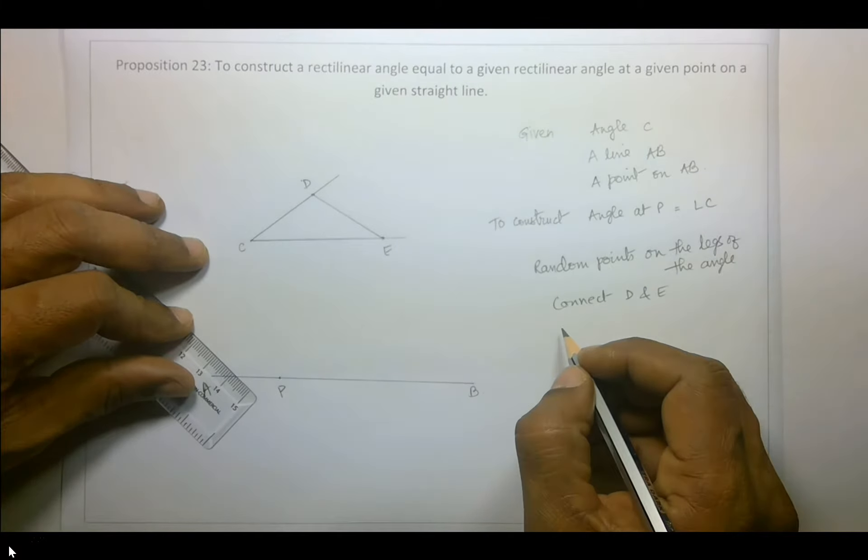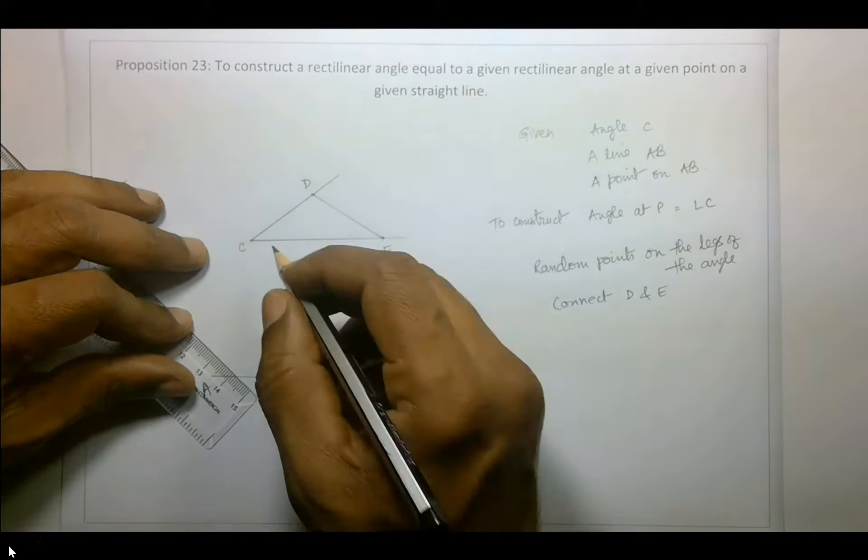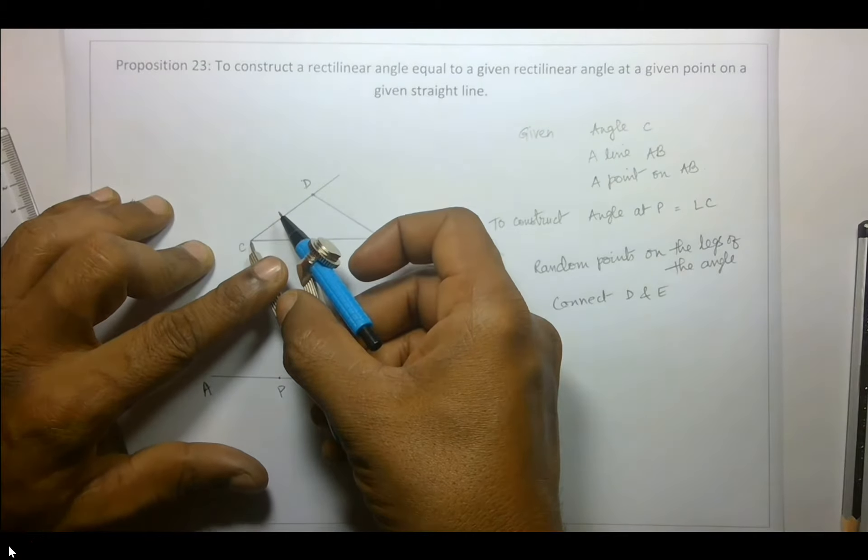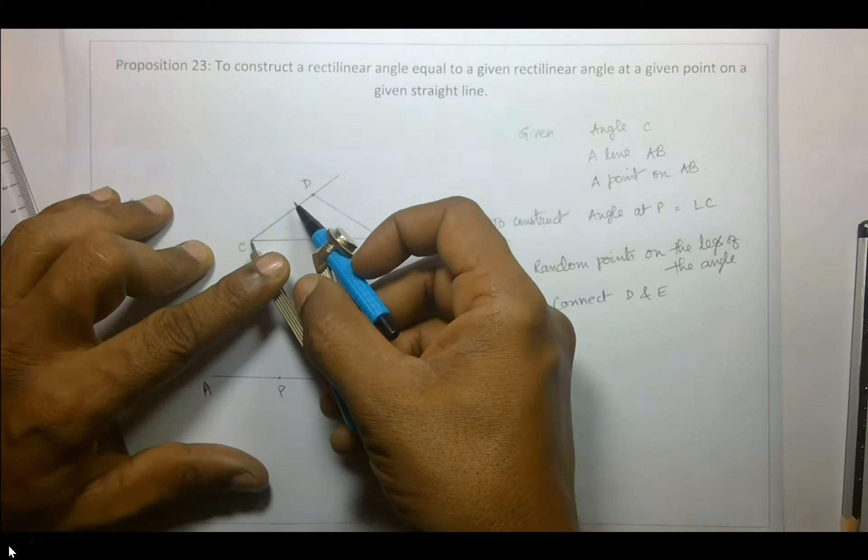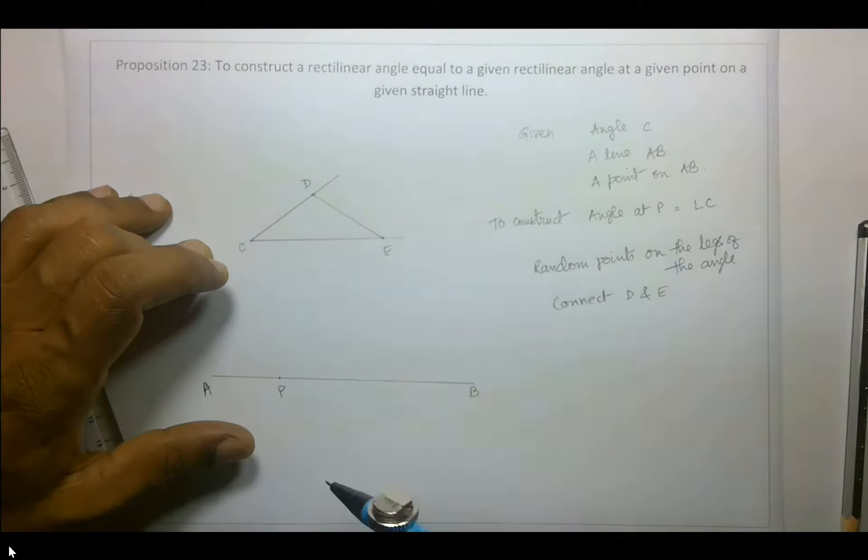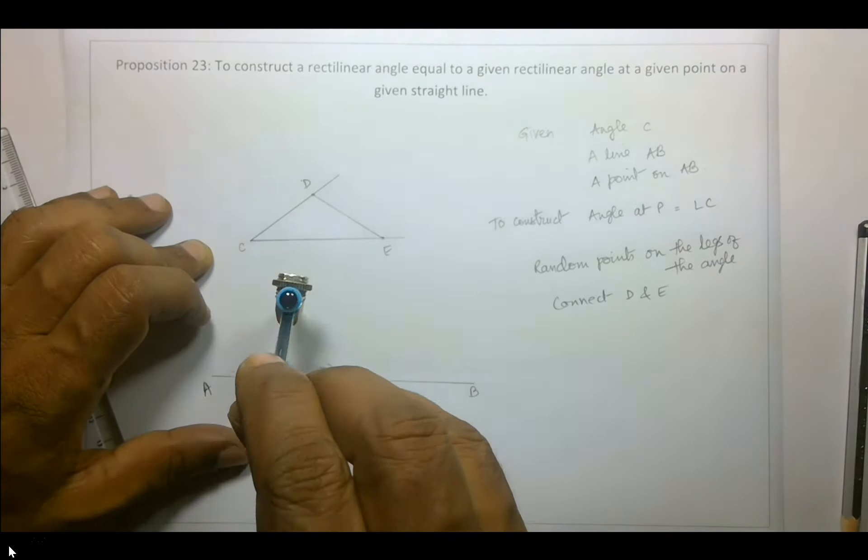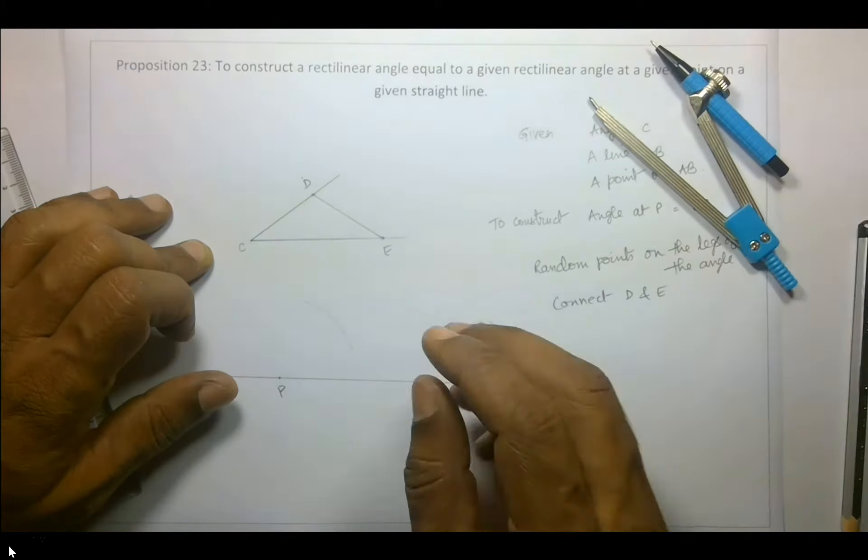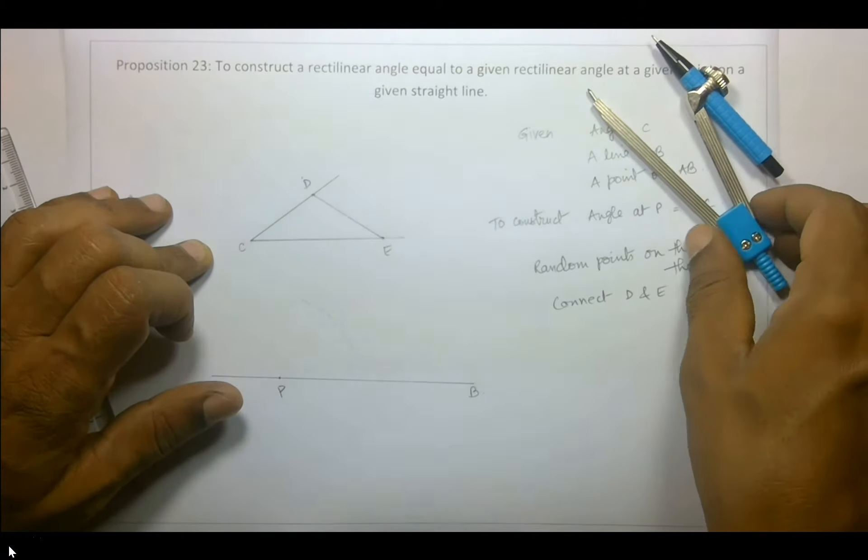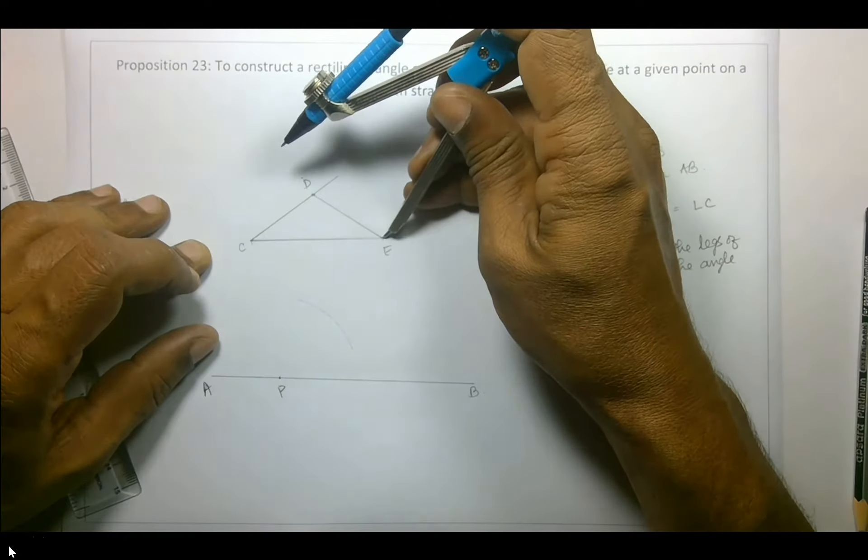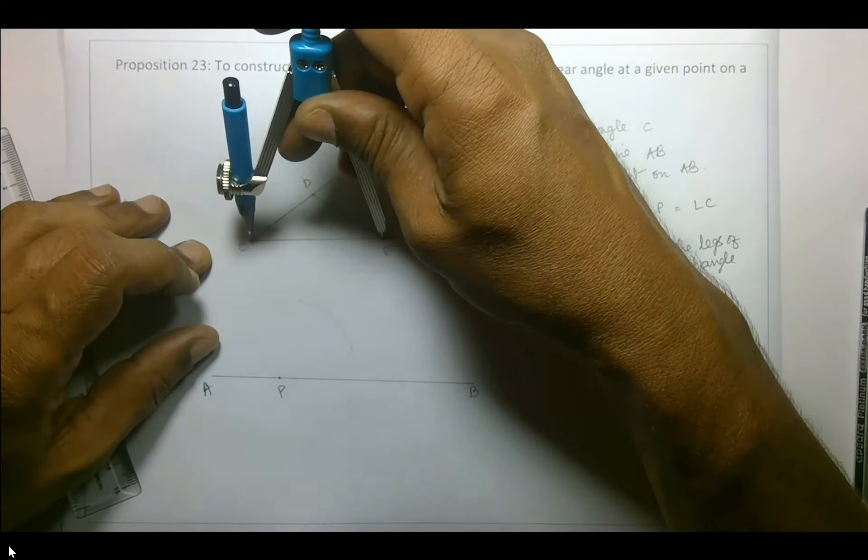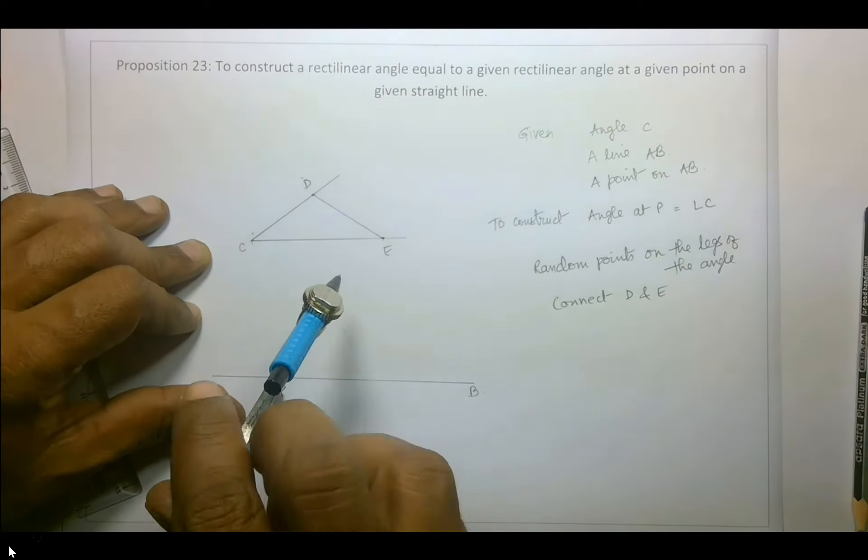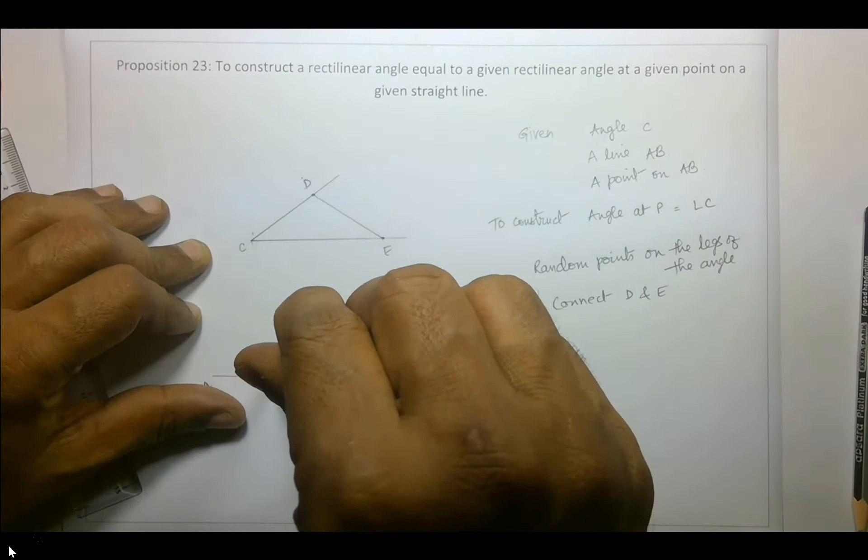Now at P, create a circle with radius as CD. Okay, so we don't need to draw the entire circle, just enough for us to be able to intersect it where we think the intersection is going to be. So let's see whether I measured it correctly. Okay, so from here I intersect this line.